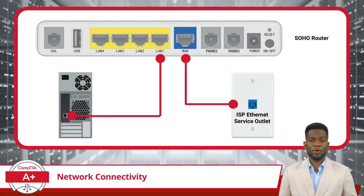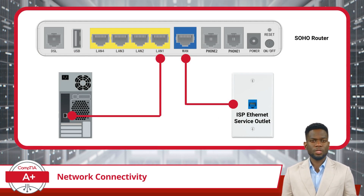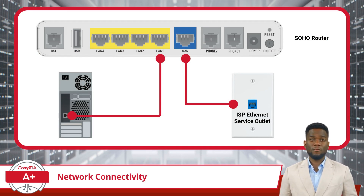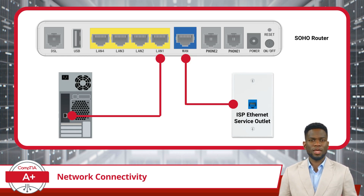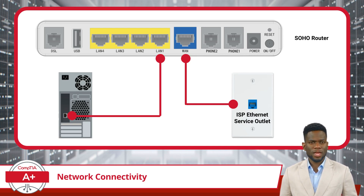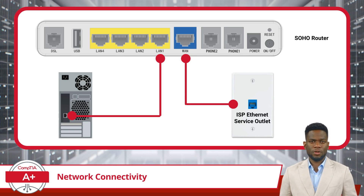Once you have a properly constructed Ethernet cable, it is time to establish network connections. Ethernet cables can be used to bridge the gap between devices and the internet by connecting from an ISP service outlet to the router's WAN port. Ethernet cables can also connect devices within your local area network, like servers, workstations, and printers, by creating a link between the Ethernet port of a device and the LAN port on a router.